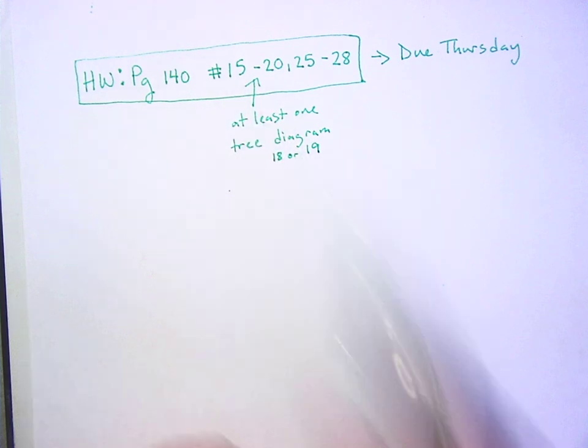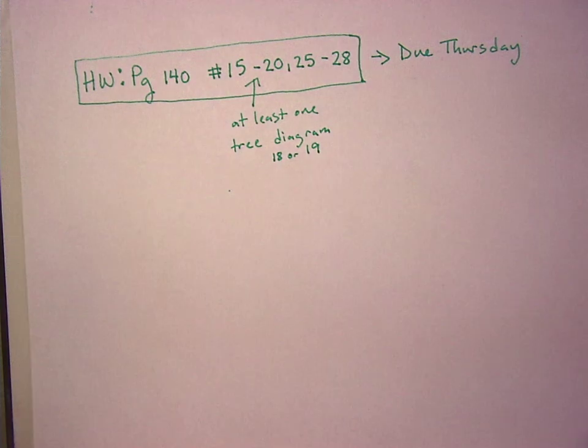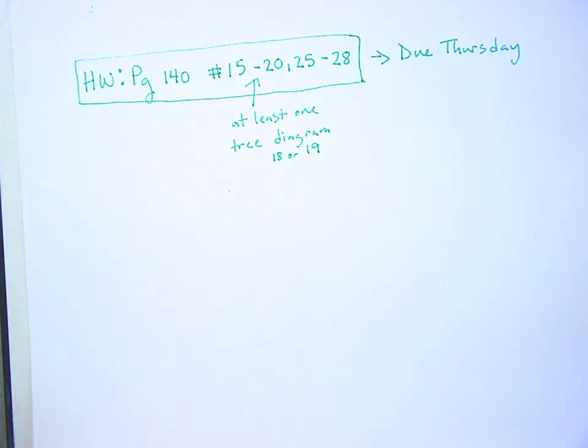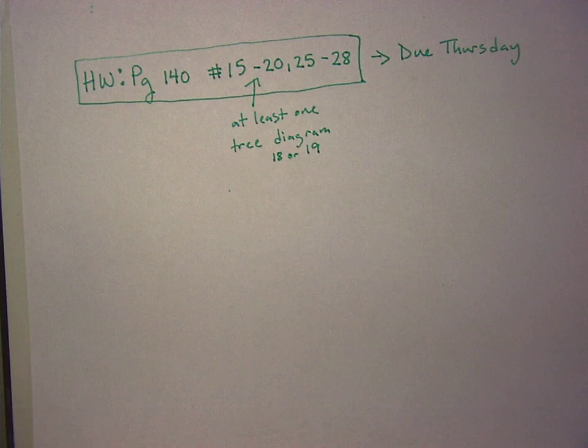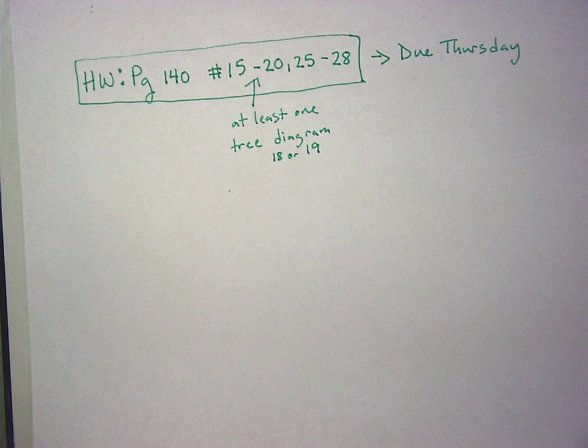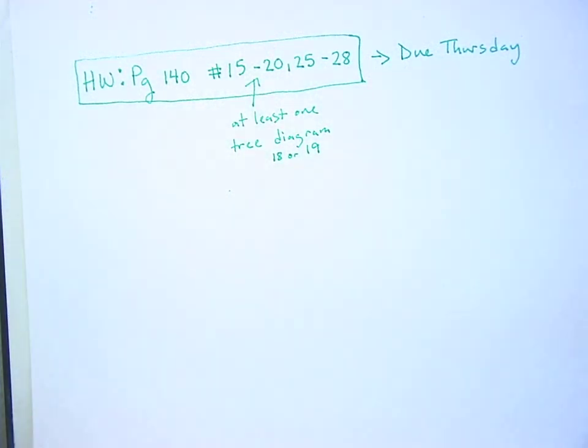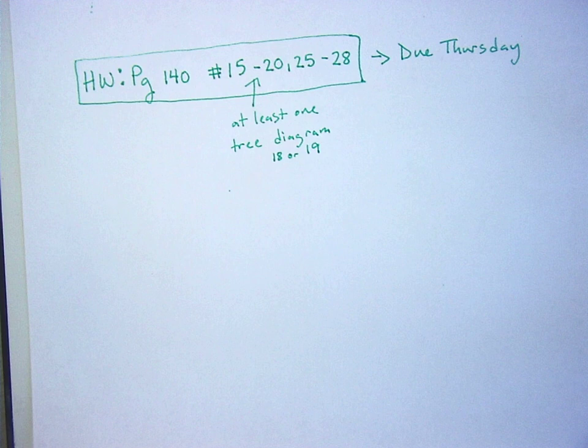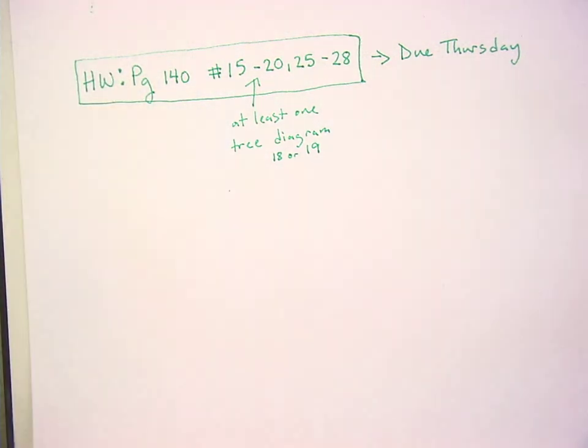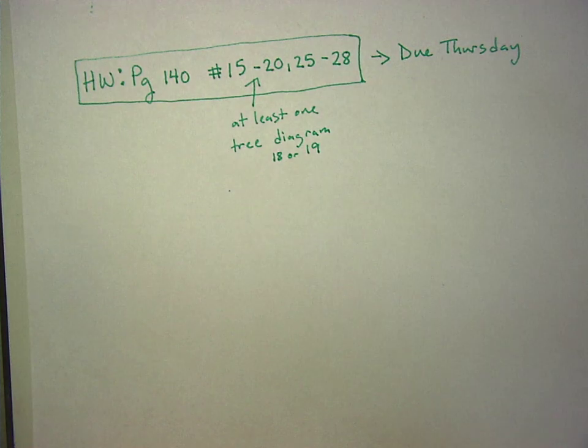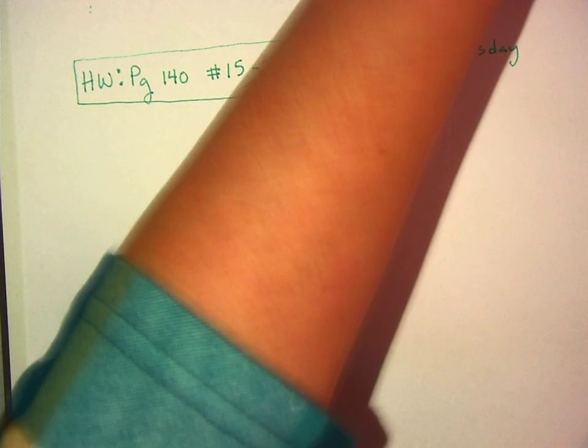So it's just basically, identify the sample space and determine how many outcomes are in there. So number 15 says, guessing the initial of a student's middle name, how many possibilities are there? 26. And you don't have to write out A, B, C, D, E, F, G. You can just write 26, all the letters of the alphabet. You've got about eight minutes right now. You could easily get most, if not all, of this done.